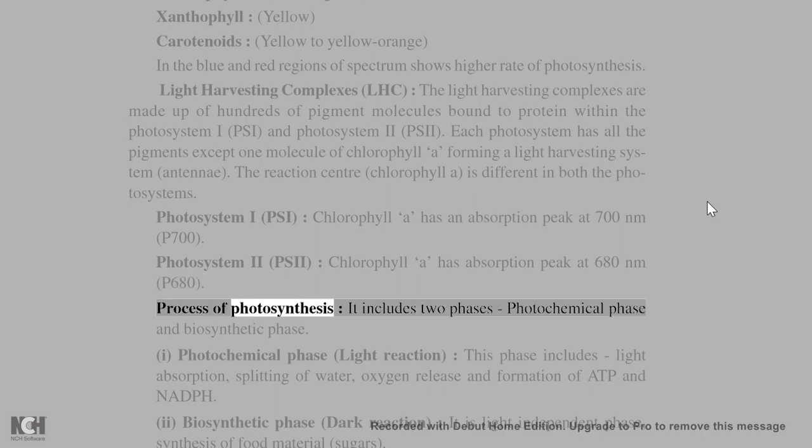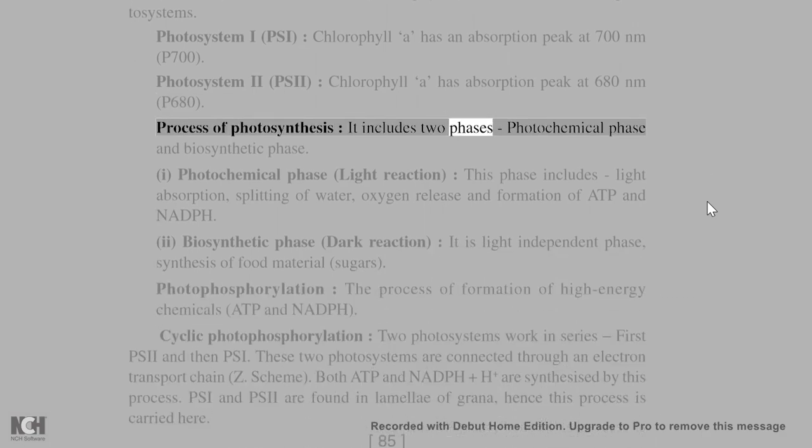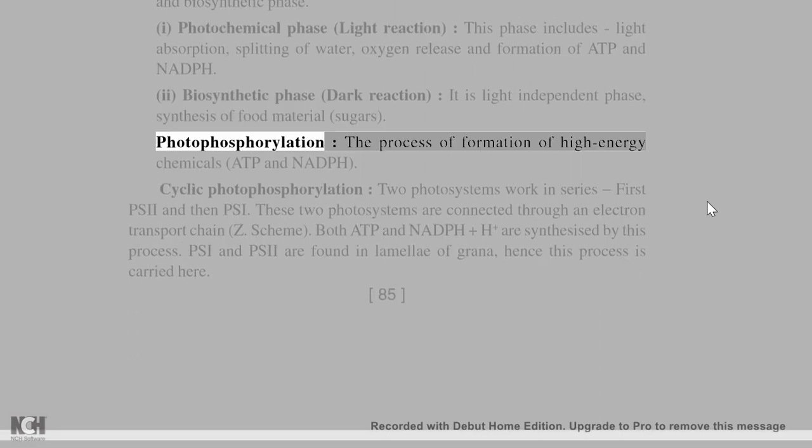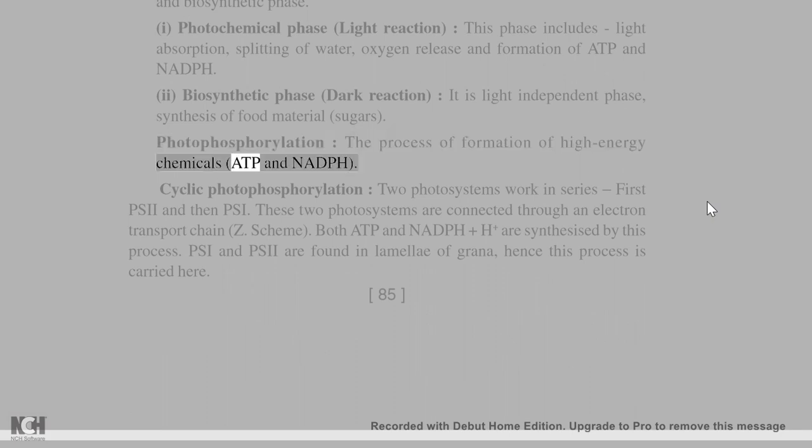Process of photosynthesis includes two phases: photochemical phase and biosynthetic phase. Photochemical phase (light reaction) includes light absorption, splitting of water, oxygen release, and formation of ATP and NADPH. Biosynthetic phase (dark reaction) is light independent phase involving synthesis of food material (sugars). Photophosphorylation is the process of formation of high energy chemicals: ATP and NADPH.